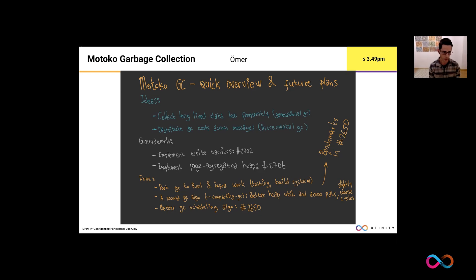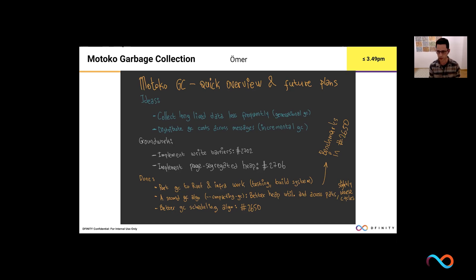We now have two ideas to further improve things. One is collecting long-lived data less frequently — this is called generational GC, a well-known idea. Another is distributing GC costs across messages — incremental GC — also a well-known approach. For either of these, we first need to do some groundwork, and we have pull requests in progress as shown here. That's all I wanted to say. I can take questions now or offline. Thanks!